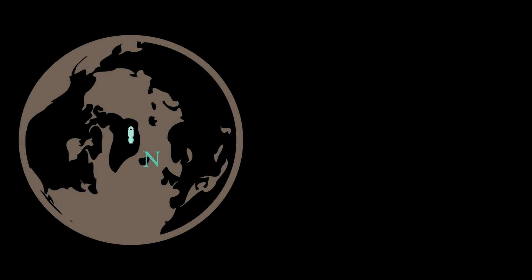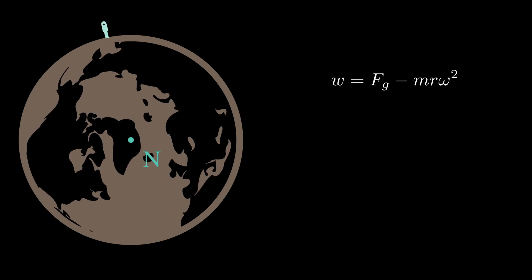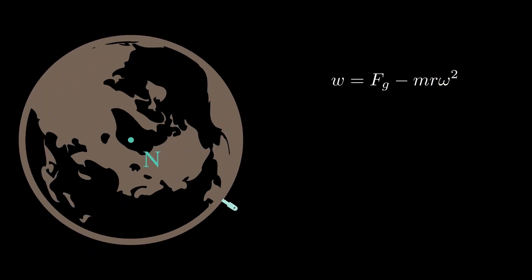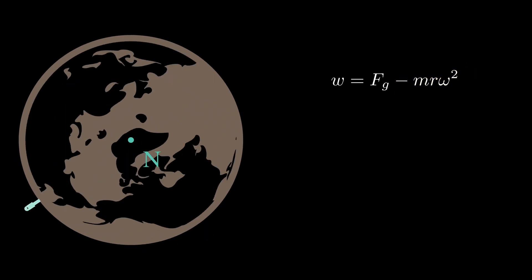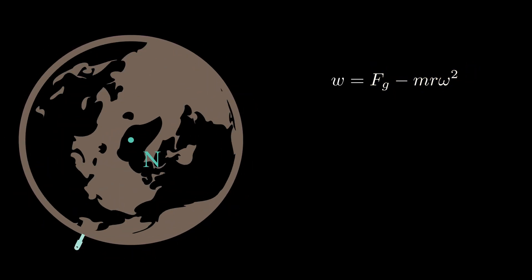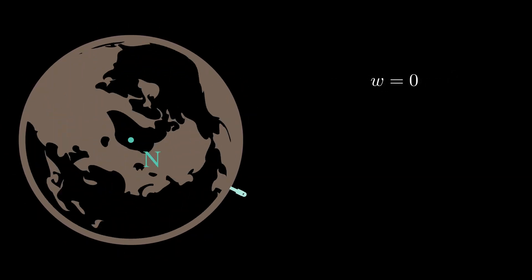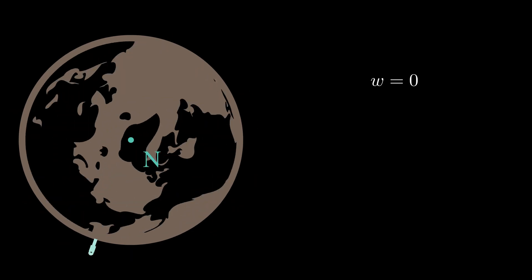This means your weight is maximum on the pole, and as you start moving towards equator, your weight reduces and it is minimum at the equator. Your weight is nothing but the force with which you are falling down. Now rearranging the equations on the right, you see if you speed up the earth's rotation, meaning increase the angular velocity omega, at some point this term will catch up with the force of gravity. And as you would have guessed, at that point the weight will become zero. And rather than standing on the ground, you will just float at the surface of the earth.